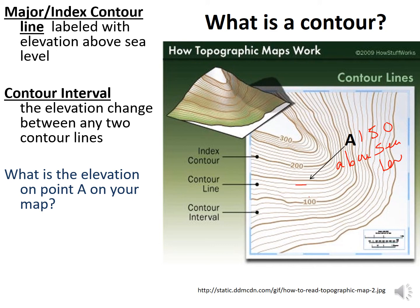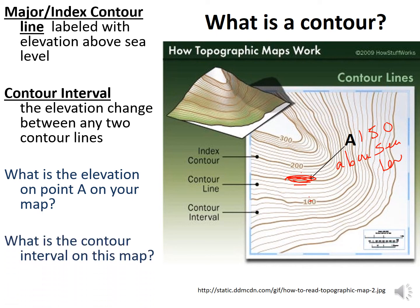The contour interval is the elevation change between any two contour lines. So what is the elevation of point A on your map? It's 150 above sea level. How do we get that? This line is 100 and this one is 200 — count the lines: there are ten lines total between 100 and 200, so point A at the midpoint is 150. The contour interval on this map looks to be around 70 to 80.